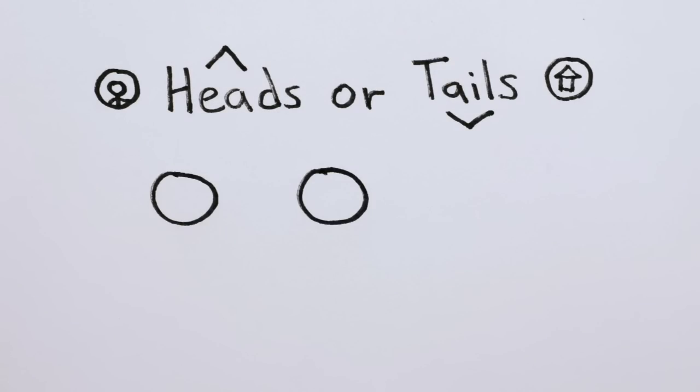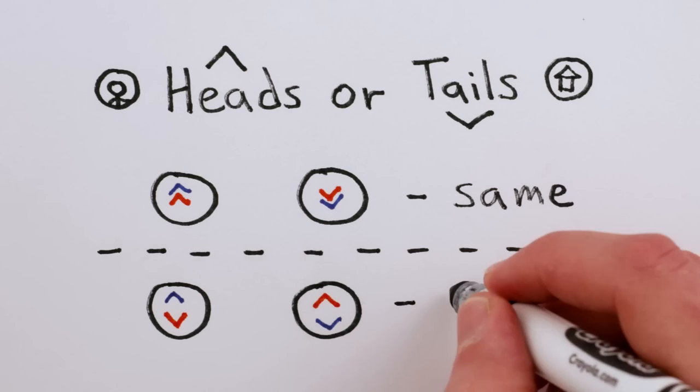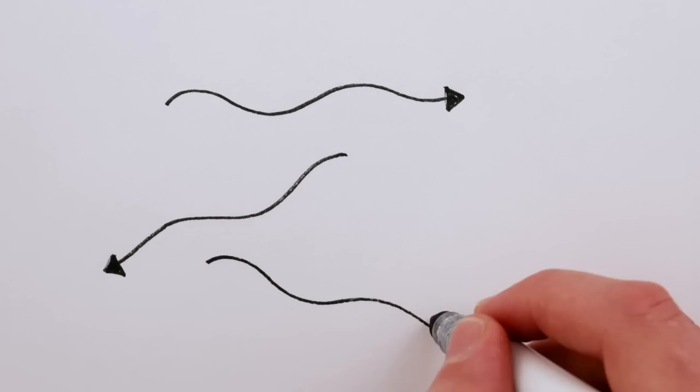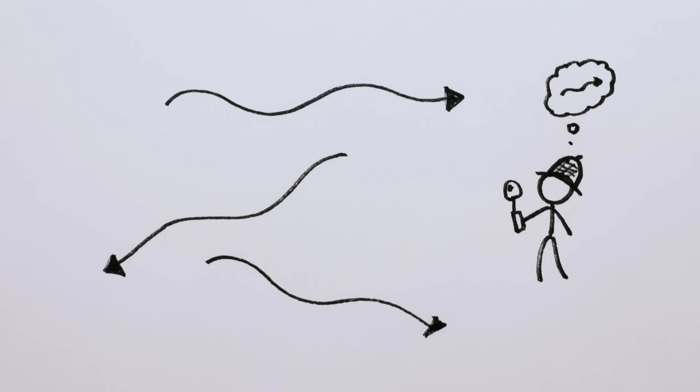Imagine flipping two coins. They can either be in the same state or in different states. But photons aren't like coins. No matter how hard you try, you can't tell one apart from another.